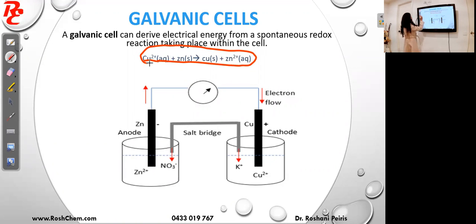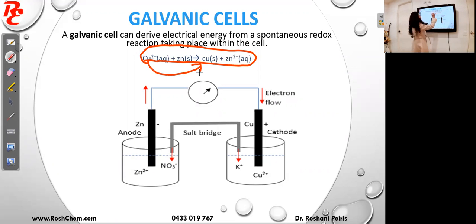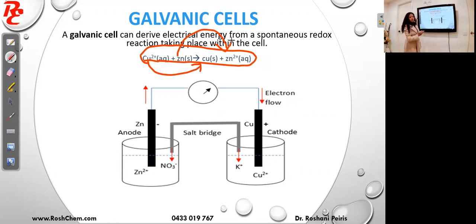In this reaction, copper 2+ is becoming copper, which is the reduction, and zinc is becoming zinc 2+, which is the oxidation.